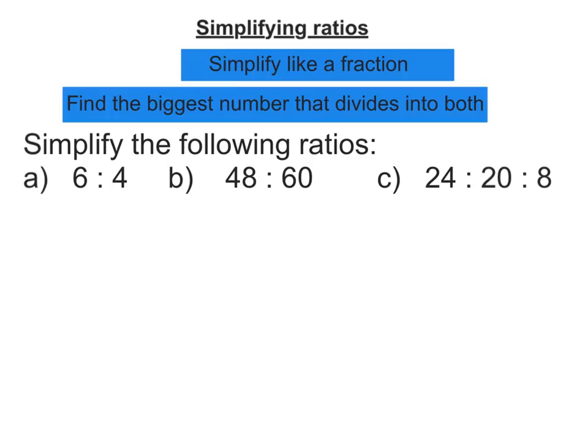So this first one, 6 to 4. What goes into 6 and 4? Well, 2 does, so let's divide both by 2. 6 divided by 2 is 3, 4 divided by 2 is 2, and that's the simplest it's going to get.